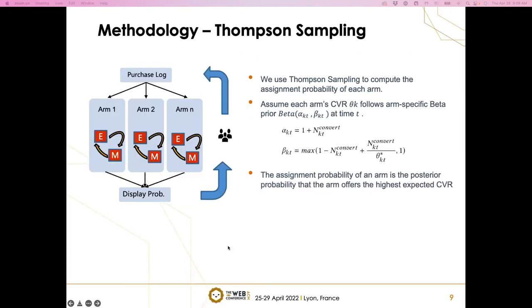The next step, once we get an estimated CVR for each group, we can use a Thompson sampling to compute the assignment probability of each arm. In order to use Thompson sampling, we need to know the distribution of estimated CVR. In general, it's not trivial to get that from the EM procedure. So we take a heuristic approach to assume the CVR follows beta distribution with those parameters alpha kt and beta kt at time t. Alpha kt is the total number of conversion at time t plus one, and beta kt is the total number of effective clicks plus one. Once we have the assignment probability of an arm, it's the posterior probability that the arm will offer the highest expected CVR. We compute this using Monte Carlo simulation.